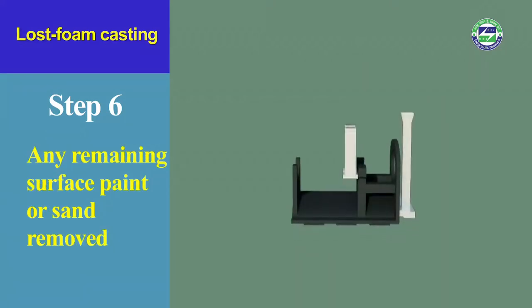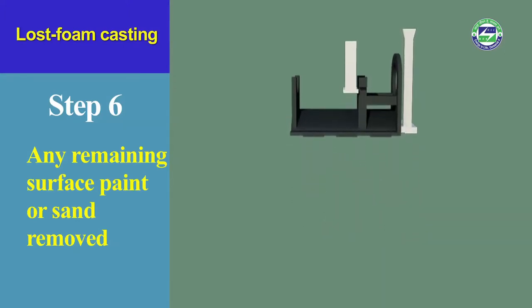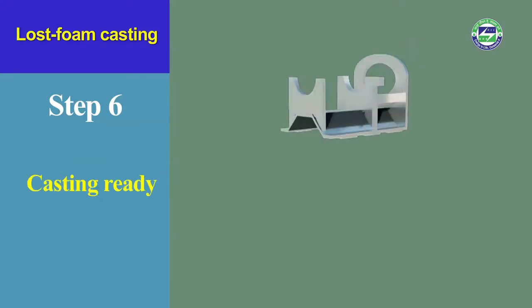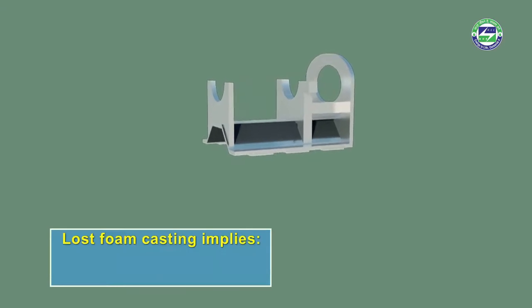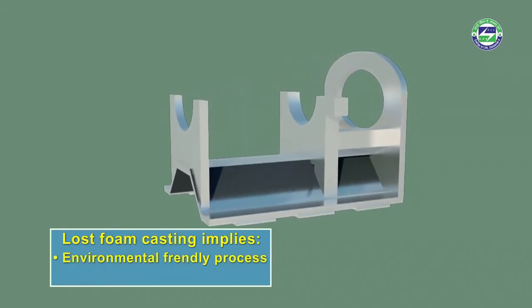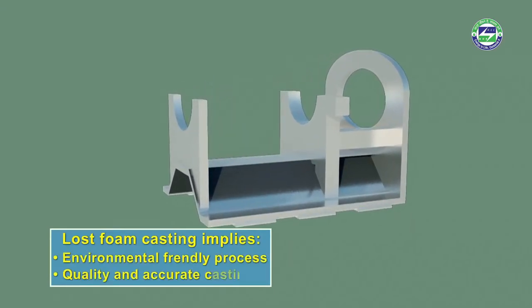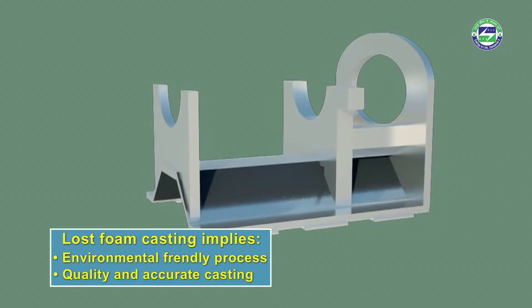Once cooled, the casting is removed from the sand mould and the surface is cleaned of sand or surface paint. The final casting product is ready for use. Lost foam offers an environmentally friendly process with the added advantage of more accurate casting.